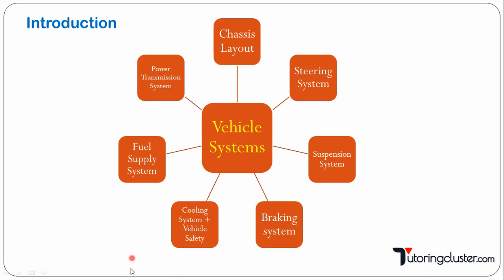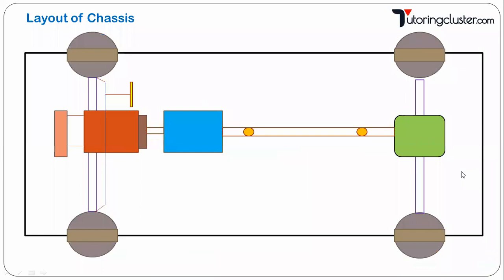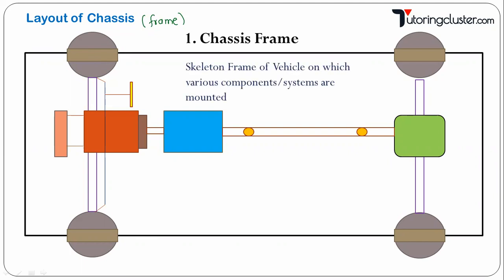So let's start the video. We are going to learn about chassis now. This is a picture of the layout of a chassis. What is chassis? You can consider it as a frame — a frame is a skeleton. This is called a chassis. So it is a skeleton frame of the vehicle on which various components or systems are mounted — for example, the gearbox, engine, suspension system, steering system, fuel tank.